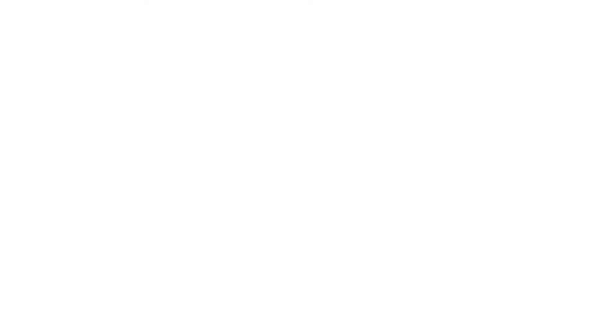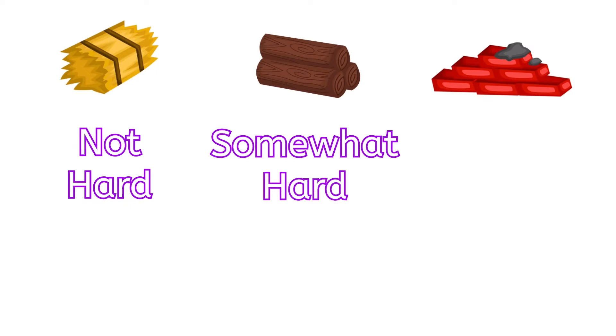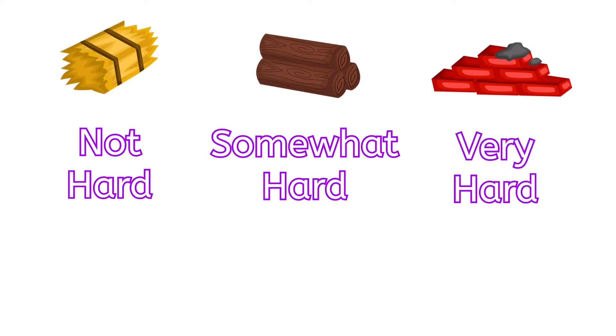Let's also think about the property hardness. This is a little different when we're talking scientifically — we don't just mean hard and soft like a pillow. Hardness is a scientific property that measures how hard it is to make a dent or to scratch something. Straw is the least hard of our materials. Wood is pretty hard, but you could scratch wood or make a mark in it. The hardest material would be brick — very hard to make a dent in brick or to scratch it.